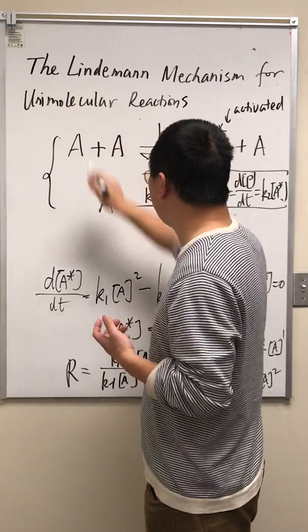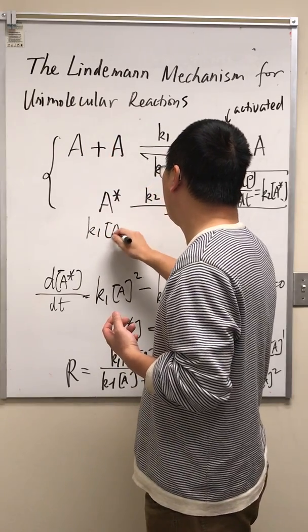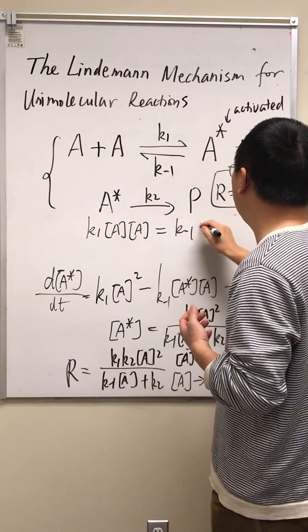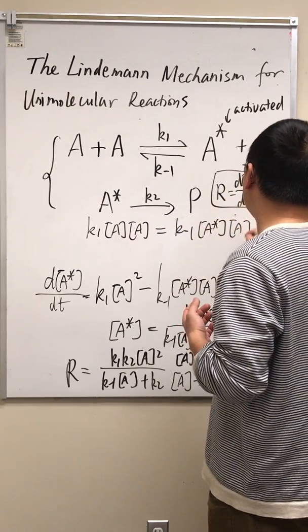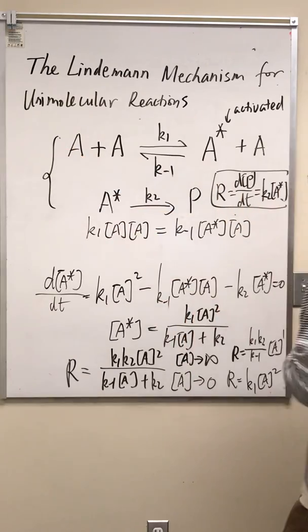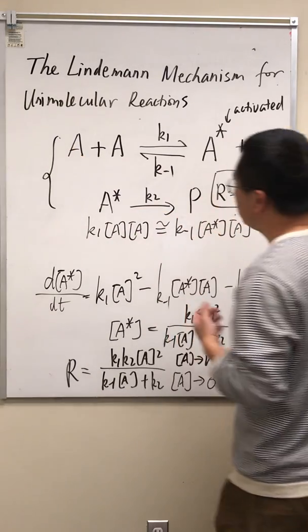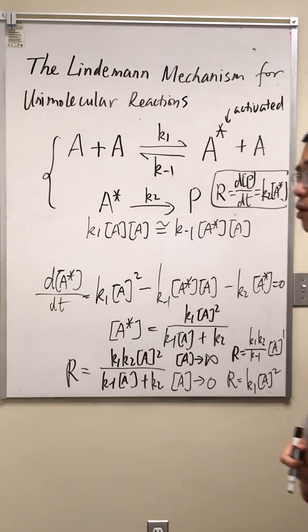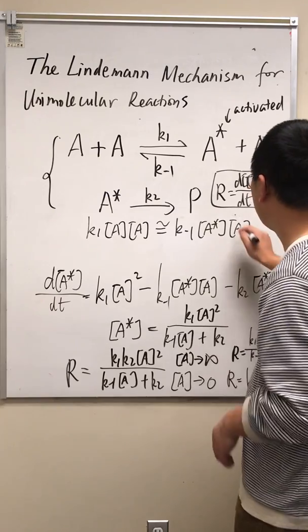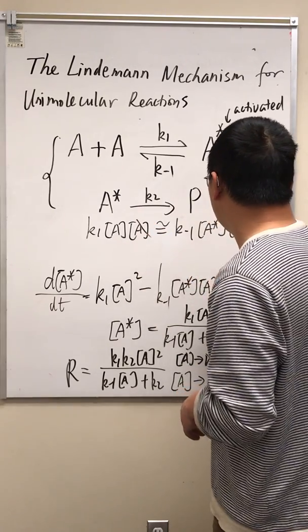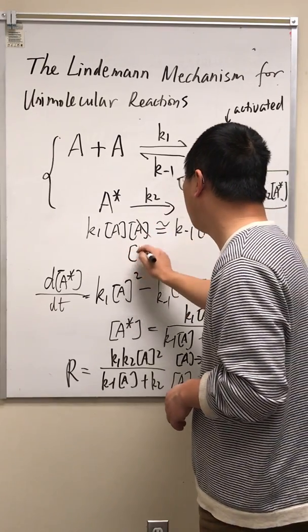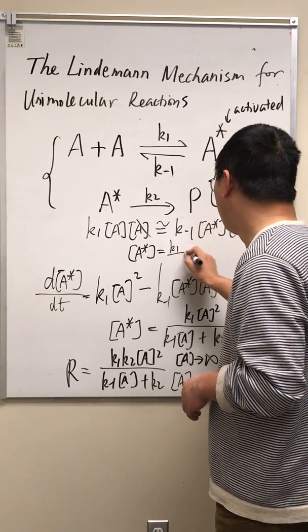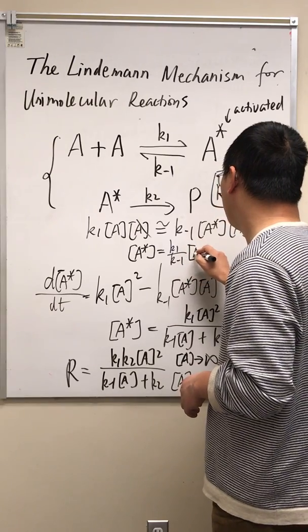And what's the equilibrium? That means just K1 times A times A, that's the forward reaction right here, equals K-1 A star times A. That's the backward reaction. And they are very close to each other. Pseudo-equilibrium. And then we simply just do this. A and A cancel. We get the expression of A star. A star is simply just K1 over K-1 times A.